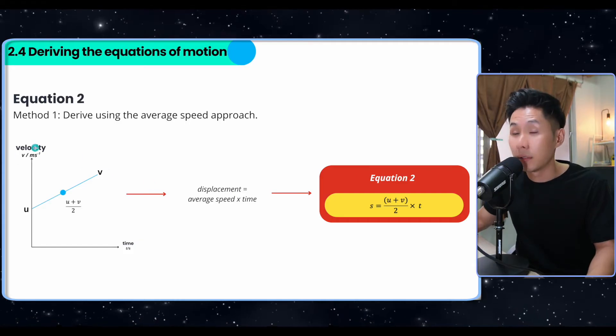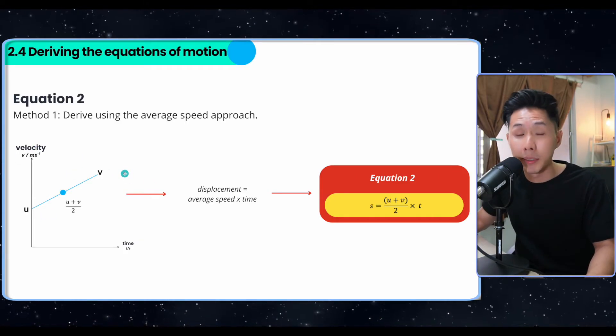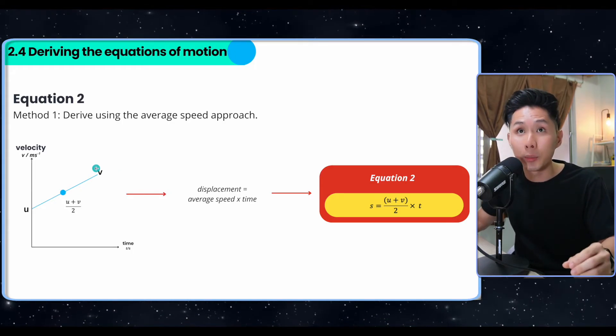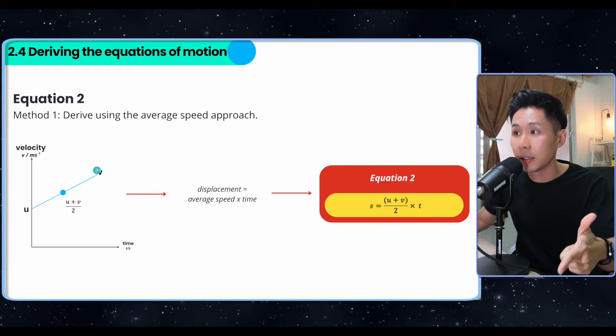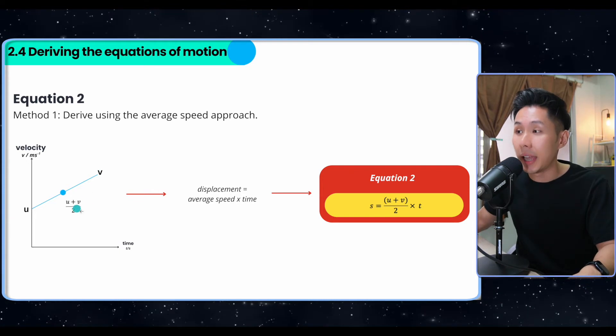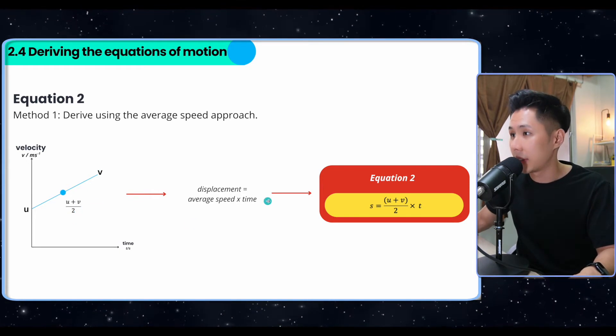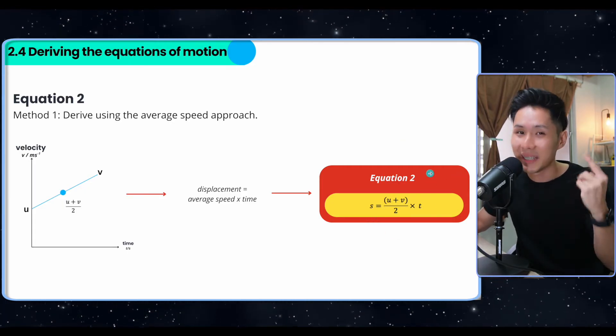Equation two will require a velocity time graph. So look at this graph here. To find out displacement, you know that displacement is equal to velocity times time. So in this case, because we are assuming that acceleration is constant, the object is traveling in the same line, we can safely use the average speed, which is u plus v divided by 2, multiply by time, this will give us the displacement. And that's how we got equation two. Simple.